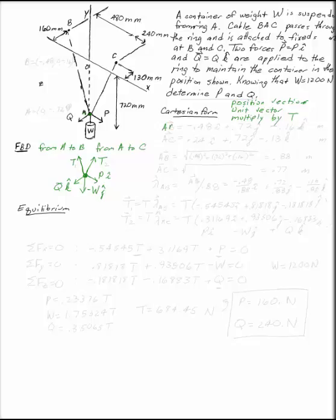Let's start with the position vector. The vector from A to B, the position vector from A up toward B, is negative 0.48 in the i direction plus 0.72 meters in the j direction and minus 0.16 meters in the k direction.